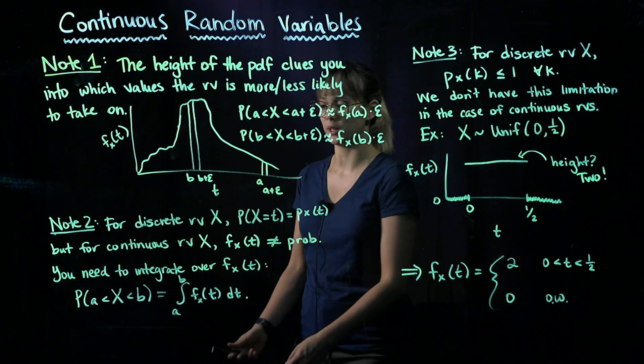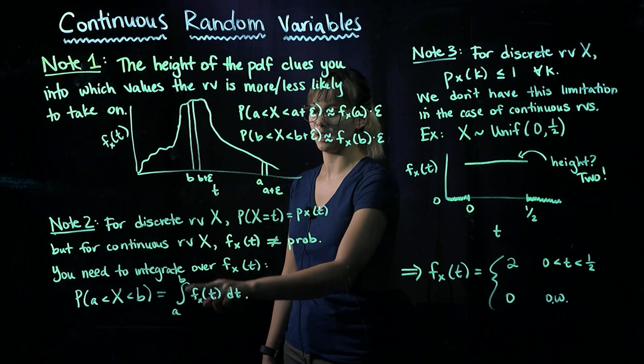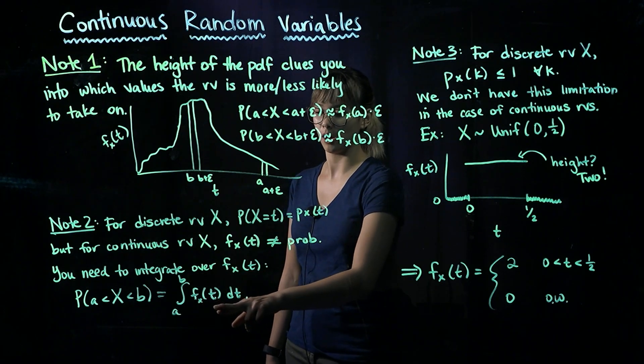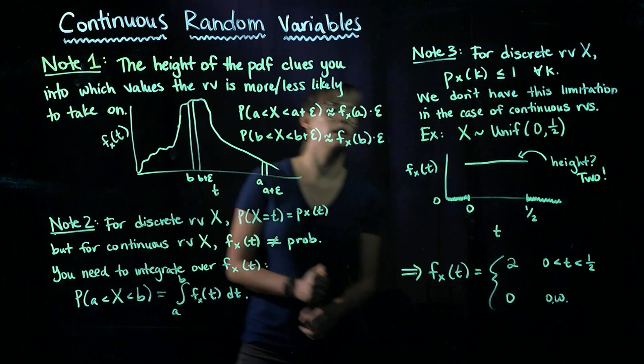So if we want to calculate the probability that X is between A and B, then we just calculate the integral from A to B, and we integrate over our PDF with respect to T.